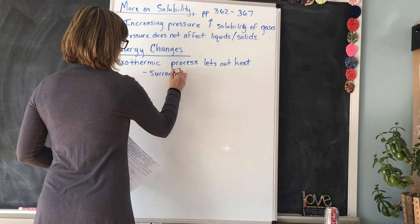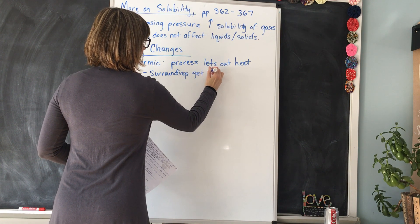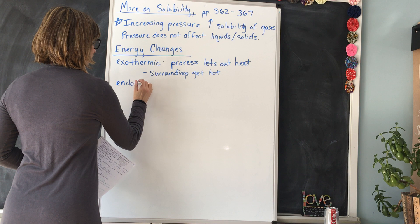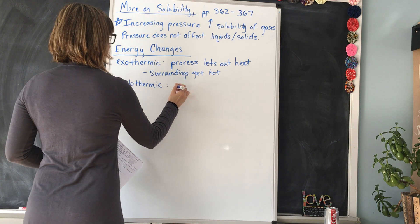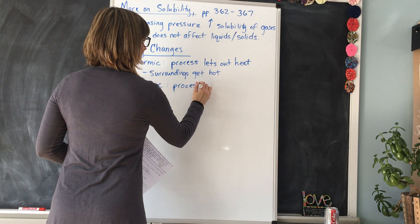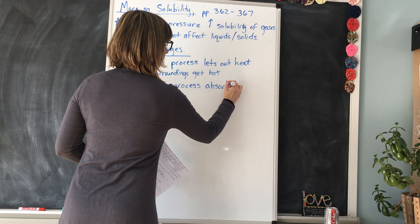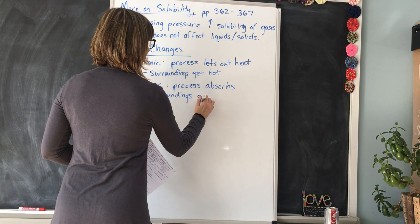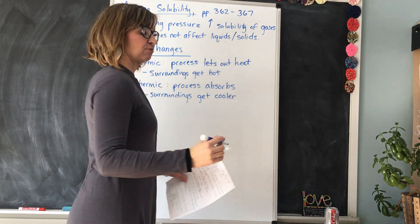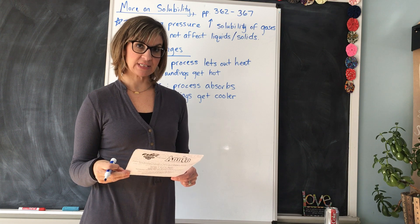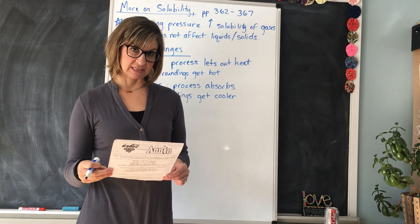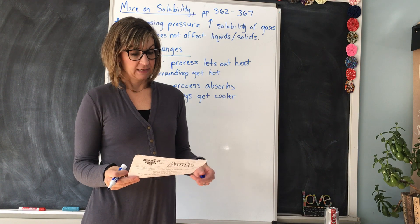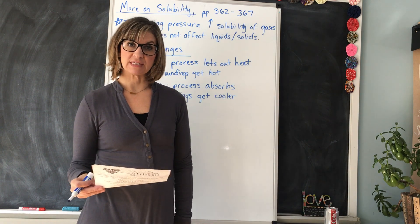The surroundings get hot — so if the solution is in a beaker, the beaker gets hot. The opposite: sometimes when you have a chemical reaction, it absorbs heat. That is an endothermic process. Endothermic is a process that absorbs heat. And if it's absorbing heat, then the surroundings get cooler because the reaction is actually taking heat out of the surroundings. So if you have an endothermic process when you're making a solution, your beaker and your solution itself would actually feel cooler to the touch. Read more about that in your book, but you just need to know those definitions and understand what that means.